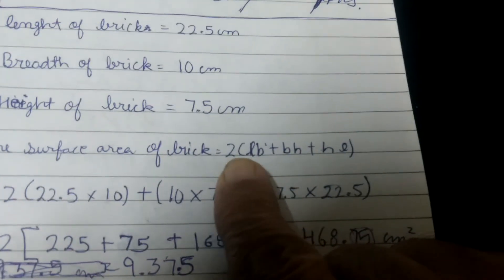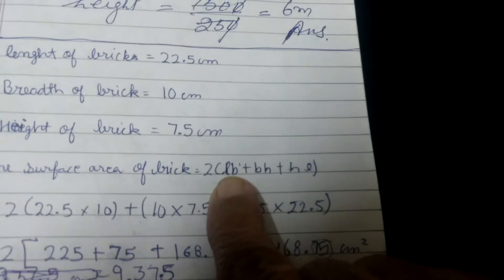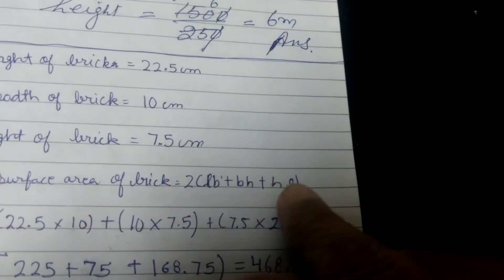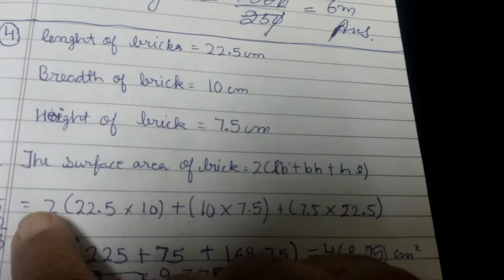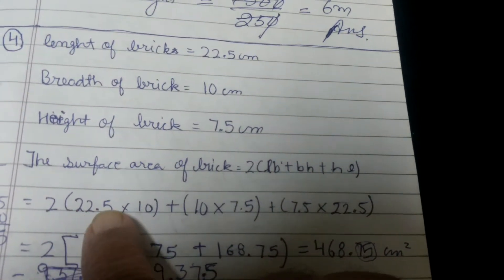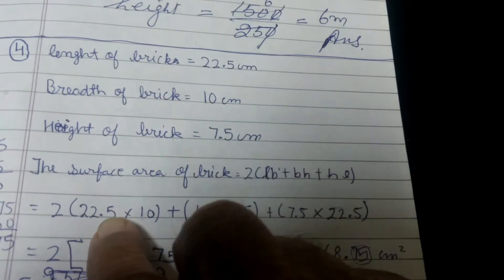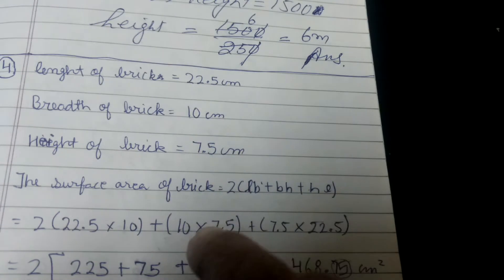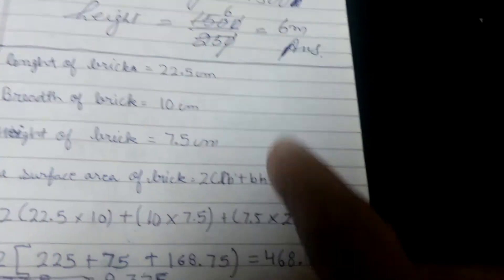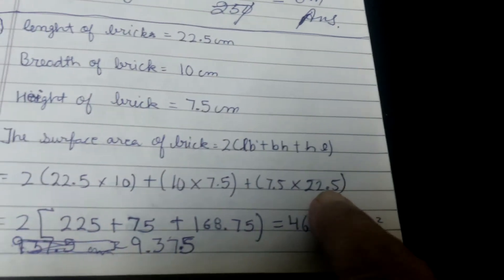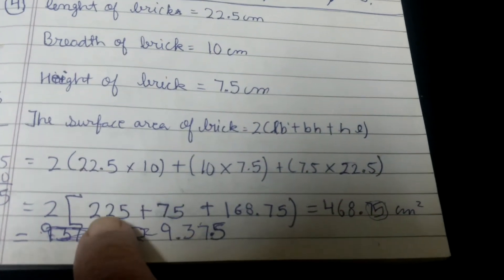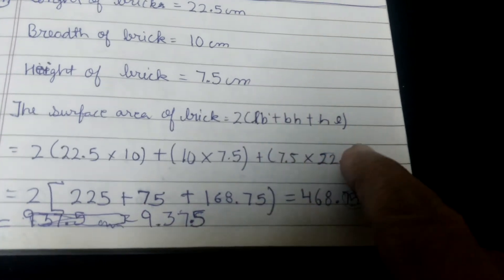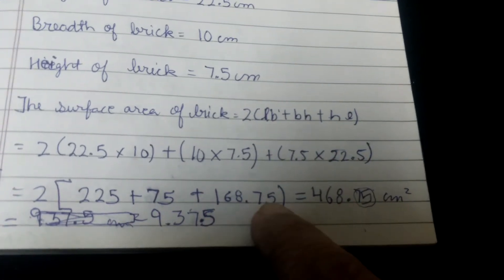The formula is 2 into (LB plus BH plus HL). LB means length into breadth, plus breadth into height, plus height into length. So the length is 22.5 cm, breadth is 10 cm. 22.5 times 10 gives 225. Then 10 times 7.5 gives 75. Then 7.5 times 22.5 gives 168.75.